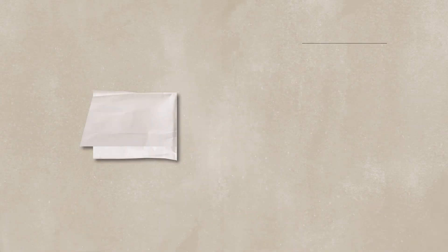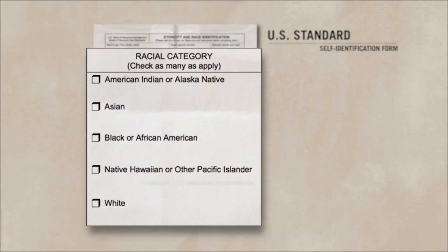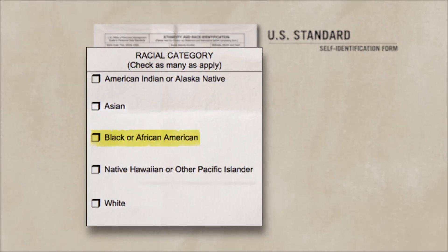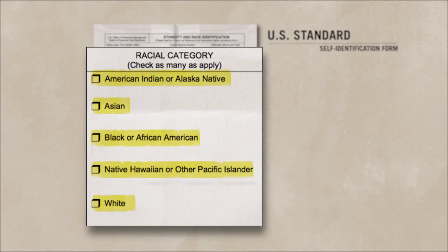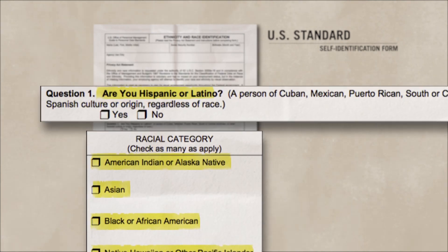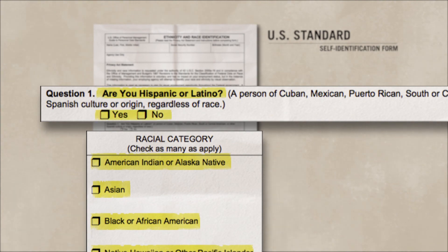Here's the problem. Anytime you get a clinical measure, we need to compare you to a reference population. In the United States, the Office of Management and Budget — OMB — has designated five racial groups: African American, White, Asian, Pacific Islanders, and Native American. And they classify two ethnic groups: either Hispanic or non-Hispanic.